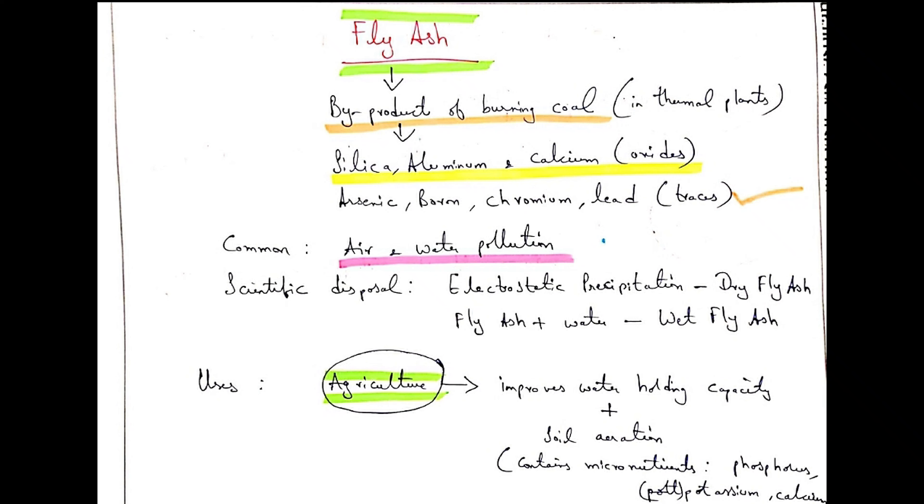common problems of fly ash? Air and water pollution. For disposal in a scientific manner, dry fly ash and wet fly ash were introduced. Dry fly ash uses the method of electrostatic precipitation, and wet fly ash is simply fly ash plus water.